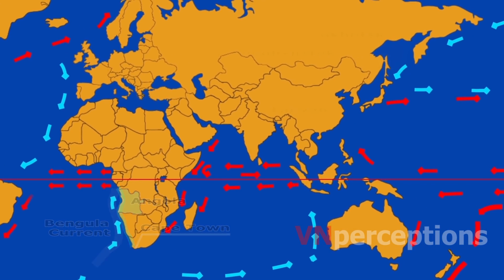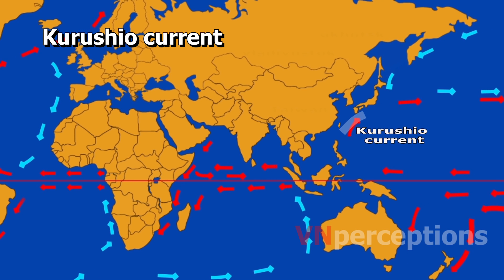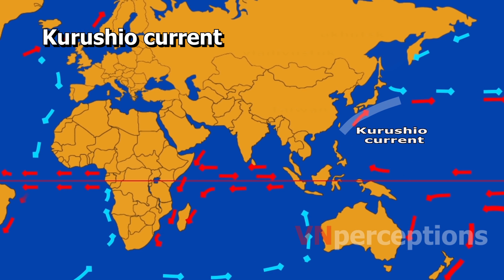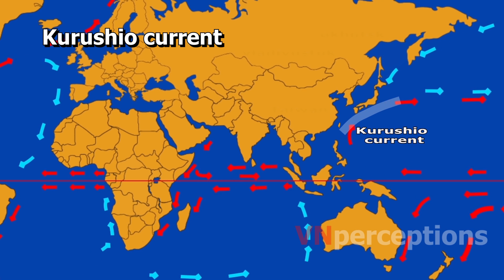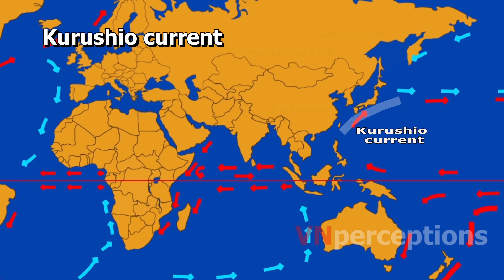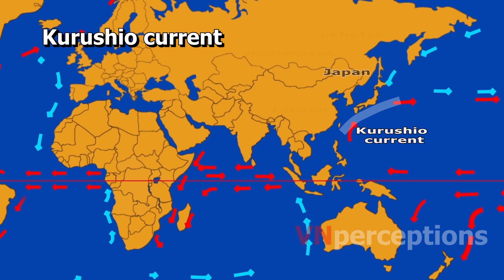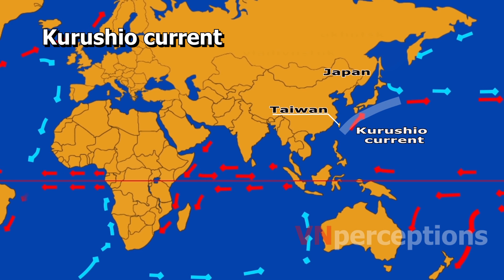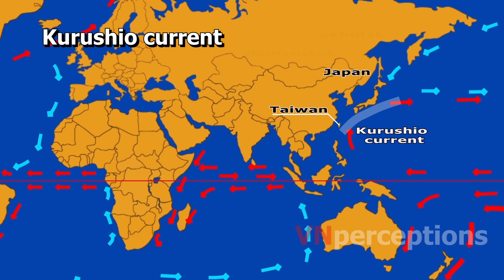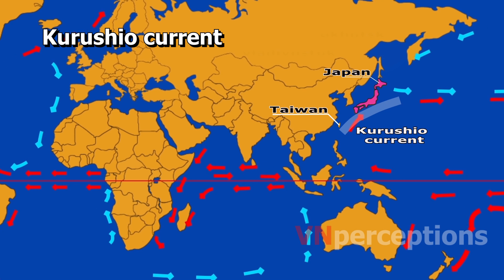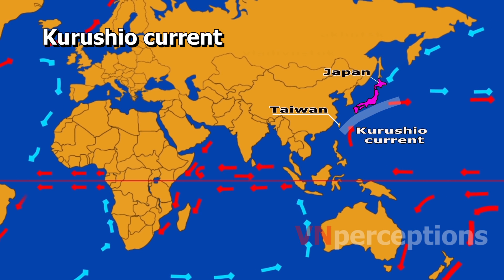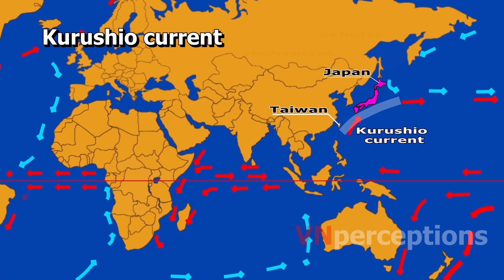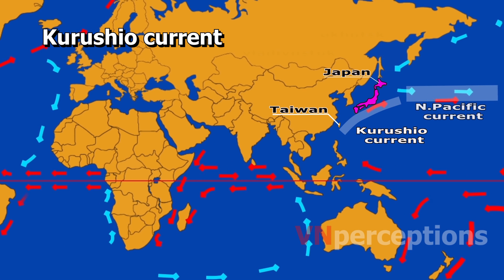Next is the Kuroshio Current. The Kuroshio Current is a strong western boundary current in the western North Pacific Ocean. It begins off the coast of Taiwan and flows northeastward past Japan, where it merges with the easterly drift of the North Pacific Current.